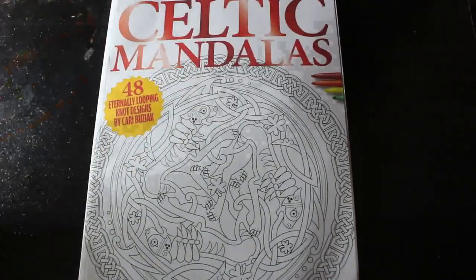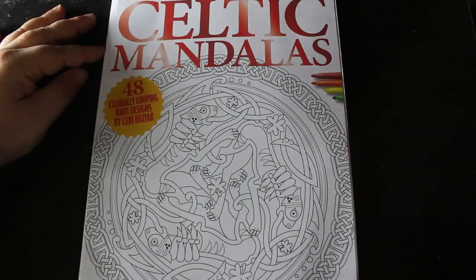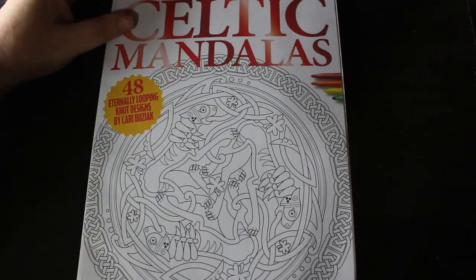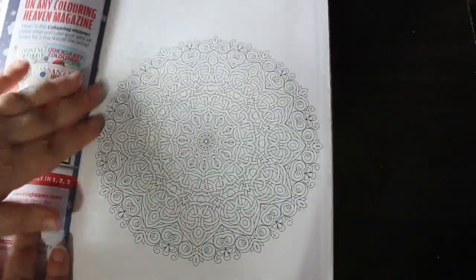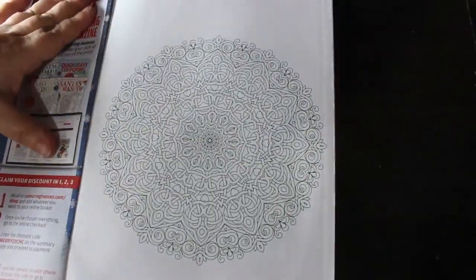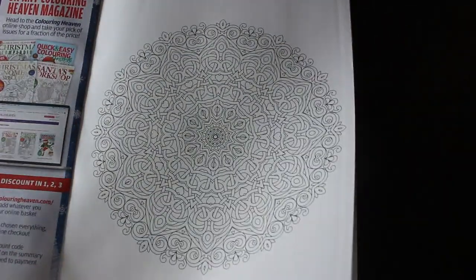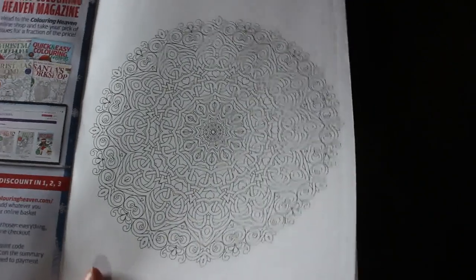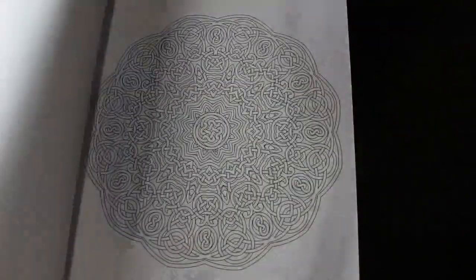Now I like Celtic and I like mandalas so let's have a look at it. This is 48 eternally looping knot designs by Carrie Boussiac and they are interesting and I do like them. I don't normally do flip-throughs of this sort of thing because they're very much hard to see and samey samey. I do want to get their quick and easy coloring which used to be Coloring in Heaven Junior. The Christmas one looks really nice.